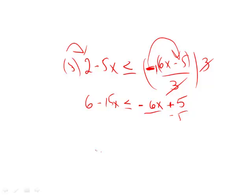So now we can just solve. Let's just subtract 5 from both sides. Subtract 5 from 6 gives us 1. We add 15x to both sides. Cancels that out.